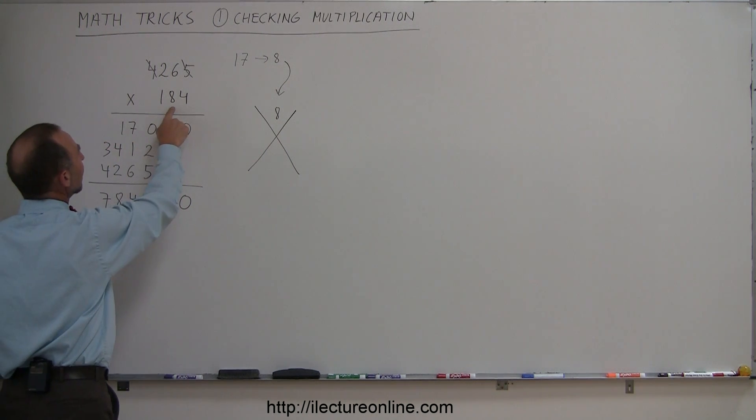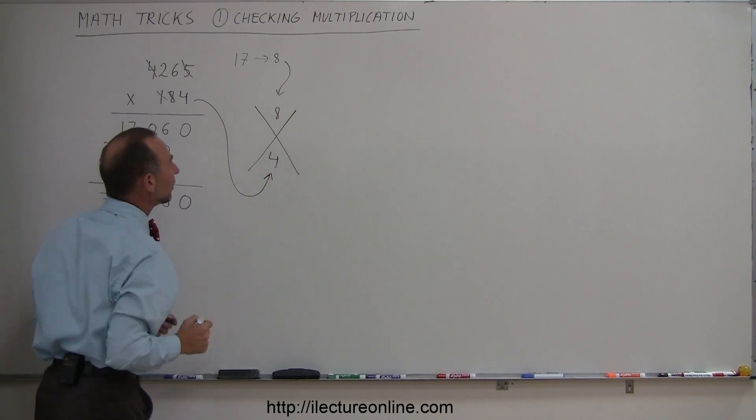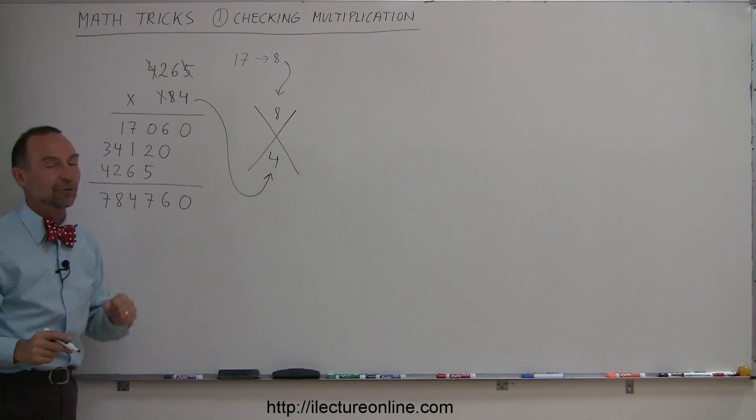Now you take this number right here. Notice 1 plus 8 is 9, so you can get rid of that and we're left with a 4. You plug that in the space down there. So now I have an 8 up there and a 4 down there.